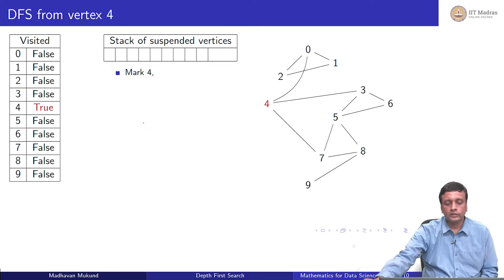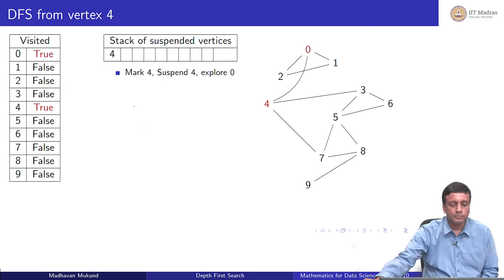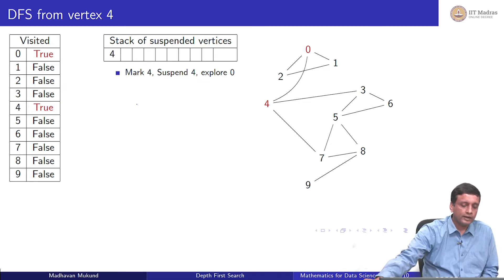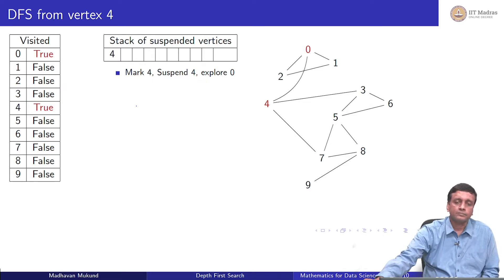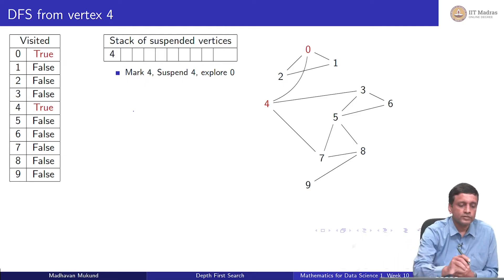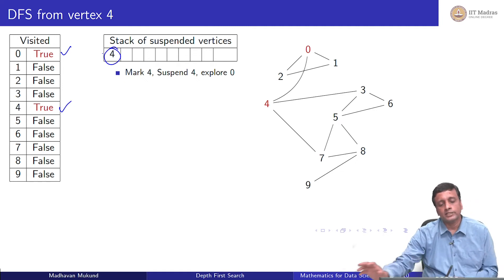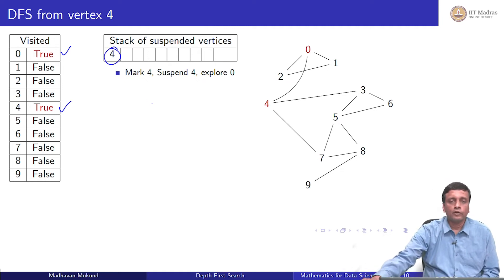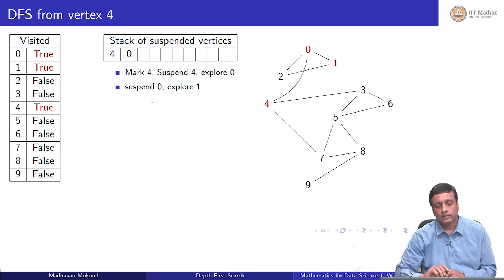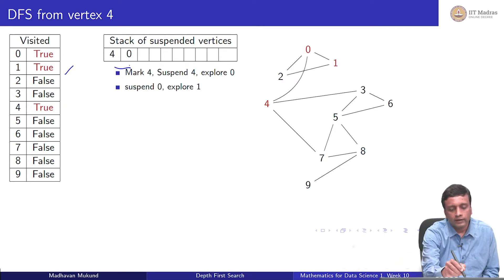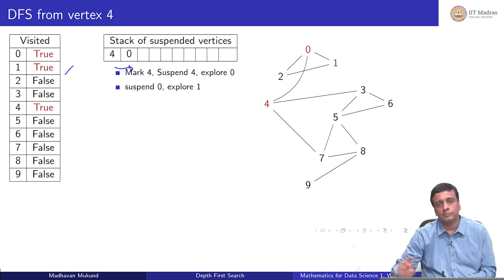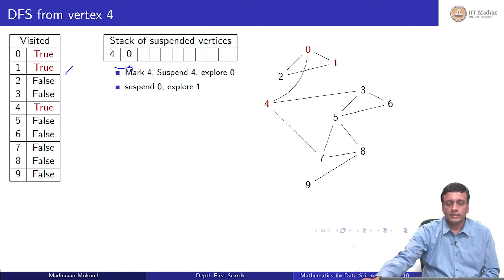The neighbors of 4 are 0, 3, and 7. We pick the smallest one: we suspend 4 and start exploring 0 instead. Now I look at the neighbors of 0 and explore them if they have not been visited. Visited is true for 0 and 4, and the stack has 4 in it. Now I suspend 0 and pick up one of its unexplored neighbors, say 1. So 0 has come on top of 4 in the stack.